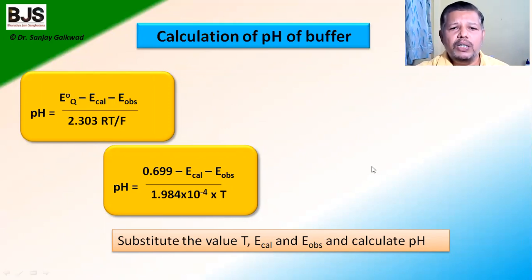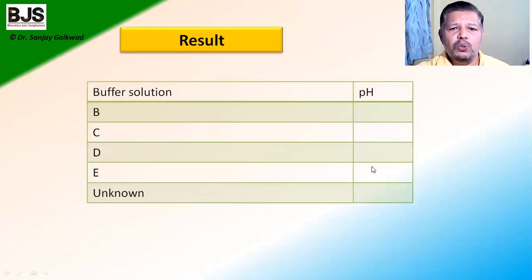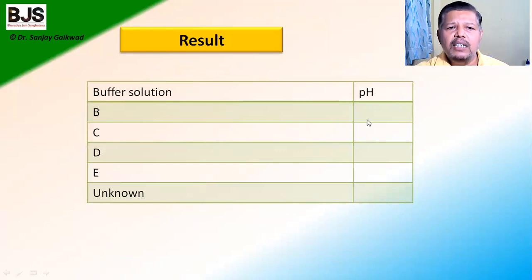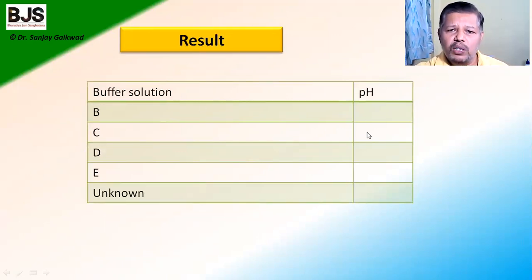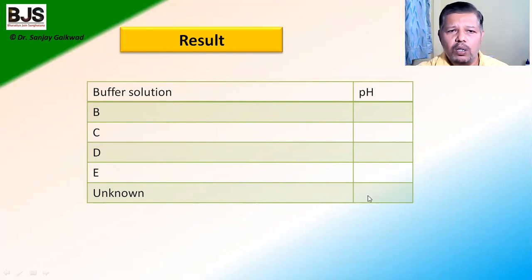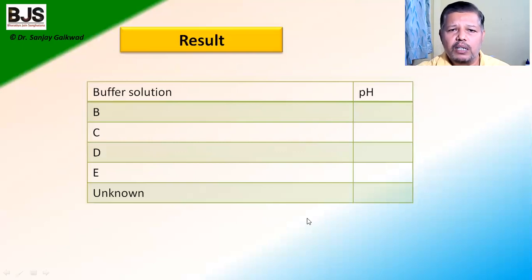We can calculate the pH of each buffer solution by substituting the values of E°_quinhydrone (0.6999 V), E_cal, E_observed for each respective buffer, and temperature. We then record the pH for buffers B, C, D, E, and the unknown. This is the application of the potentiometer.